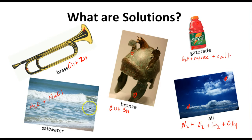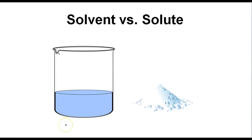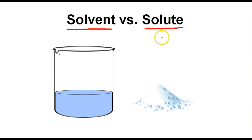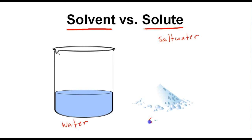So in this unit, we're going to be talking about solutions. When we talk about solutions, there are two main parts: we have the solvent and we have the solute. Take for example some salt water — a homogeneous mixture or a solution. In this picture, we have a beaker of water and a little mound of salt. For the purpose of this example, we'll use good old fashioned table salt.